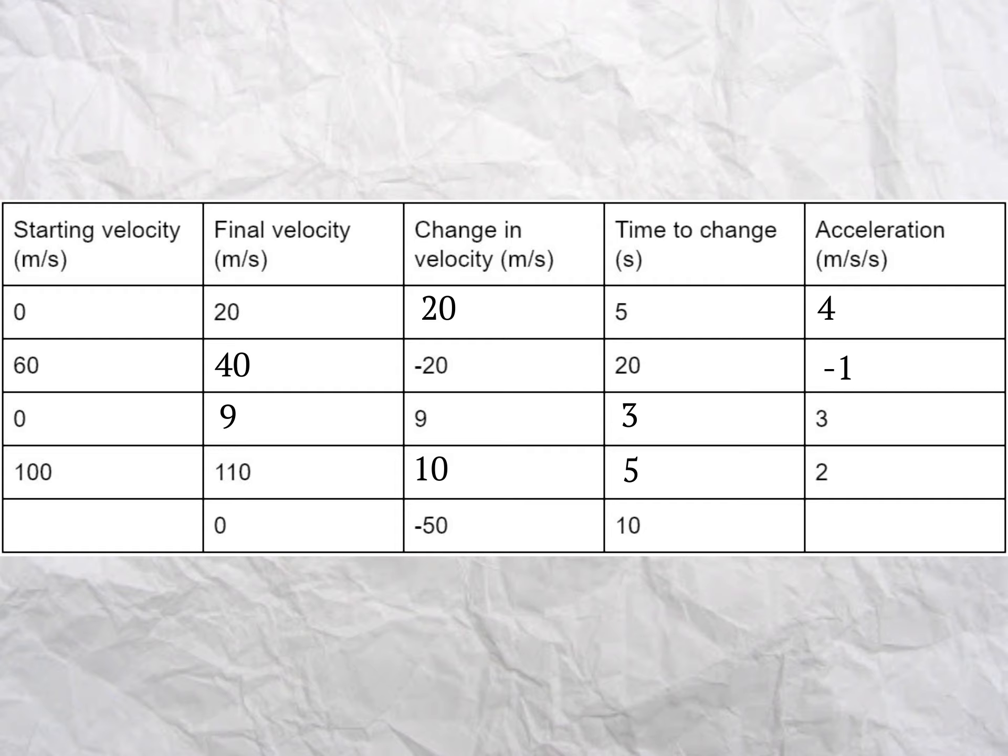And finally, line 5 wants the starting velocity, if we change by minus 50, to get to 0. Well, this is a bit trickier, but it must be 50 meters per second, because 50 take away 50 equals 0. That means the acceleration will be 50 divided by 10 seconds equals 5 meters per second per second.